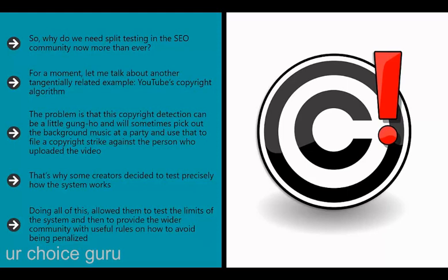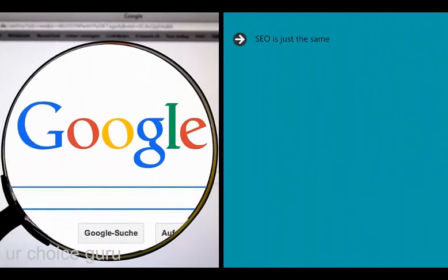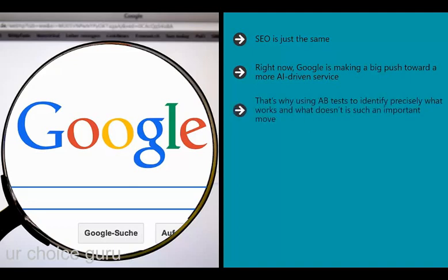SEO is just the same. Google is constantly changing its algorithms and moving the goalposts. One minute it's a good idea to get as many links as possible; the next, that's the worst thing you can do. Right now Google is making a big push toward a more AI-driven service, wanting users to speak using natural language and receive carefully curated responses - far more complex than simply looking for exact keyword matches. That's why using A/B tests to identify precisely what works is such an important move.